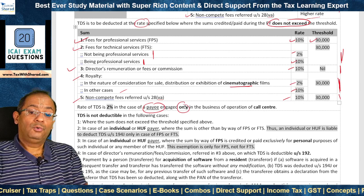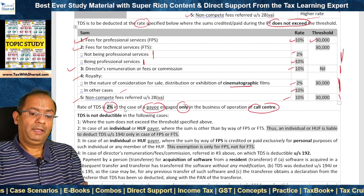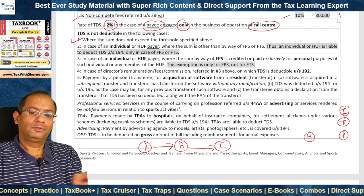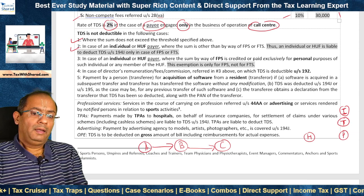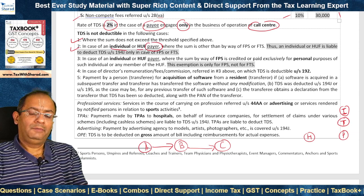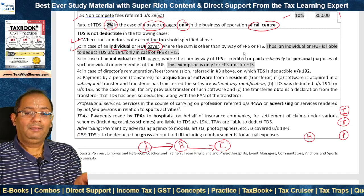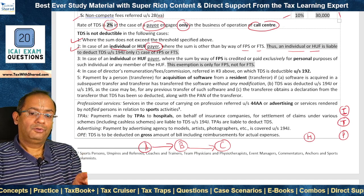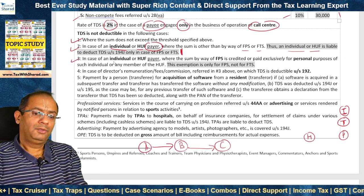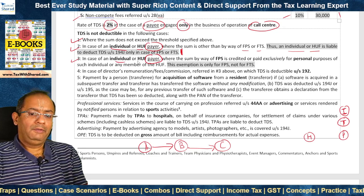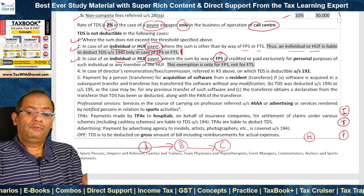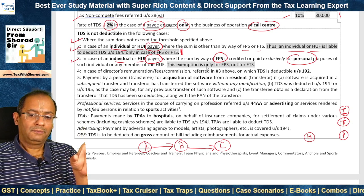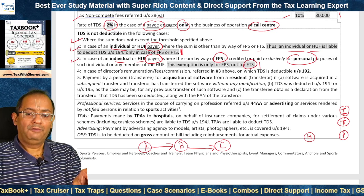TDS under section 194J is not deductible in the following cases: (1) where the sum does not exceed the threshold; (2) where the payer is a specified individual or HUF and the sum is other than FPS or FTS — meaning an individual or HUF is liable to deduct TDS under 194J only in case of FPS or FTS; (3) where the payer is an individual or HUF and the sum by way of FPS is credited or paid exclusively for personal purposes — this exemption is only for FPS, not for FTS.